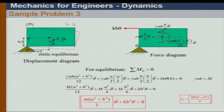What inertia forces come into play? The displacement is B/2 times theta in one direction and A/2 times theta in the other. Therefore the translational inertia forces act both horizontally and vertically, plus the body rotates about its own mass center, giving three inertia forces total.